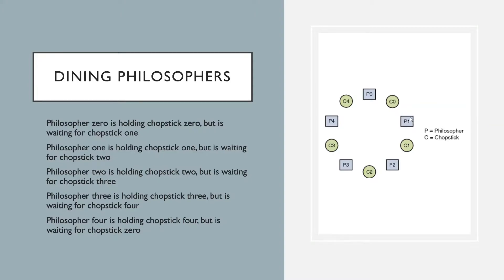Imagine a situation in which all the philosophers are thinking and all of a sudden P1 gets his idea, stops thinking, and is now hungry. P1 owns chopstick C1, so without hesitation he picks it up, but he needs two chopsticks to eat. He looks to his neighbors P0 and P2; since they are thinking, they don't need their chopsticks C0 and C2. So P1 happily borrows one and does his eating.